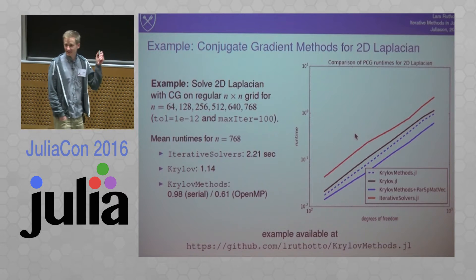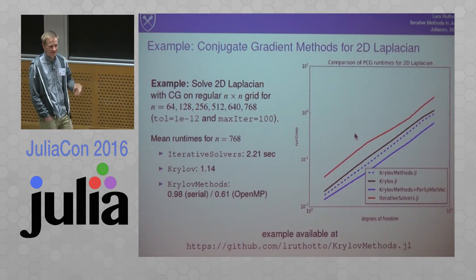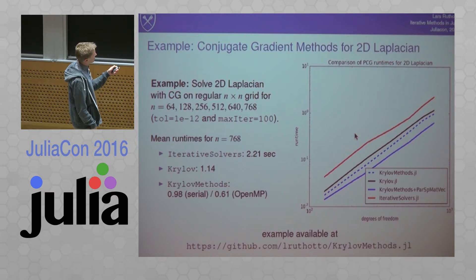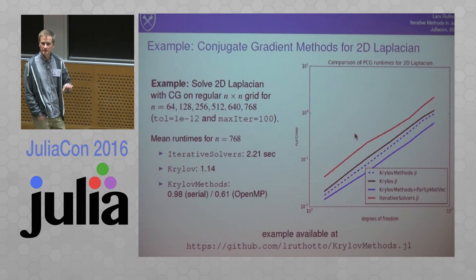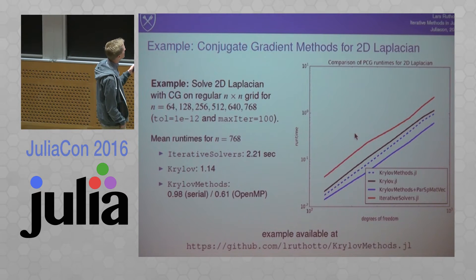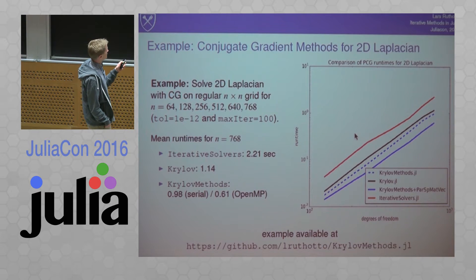Every time I run this I get different results; however, qualitatively they are always the same. You can see the runtime as the degrees of freedom goes up. The good news is all these methods scale linearly, which is the first thing you want to make sure in this application. But there is quite a difference between the red curve — IterativeSolvers.jl — the black curve, and the blue curves.